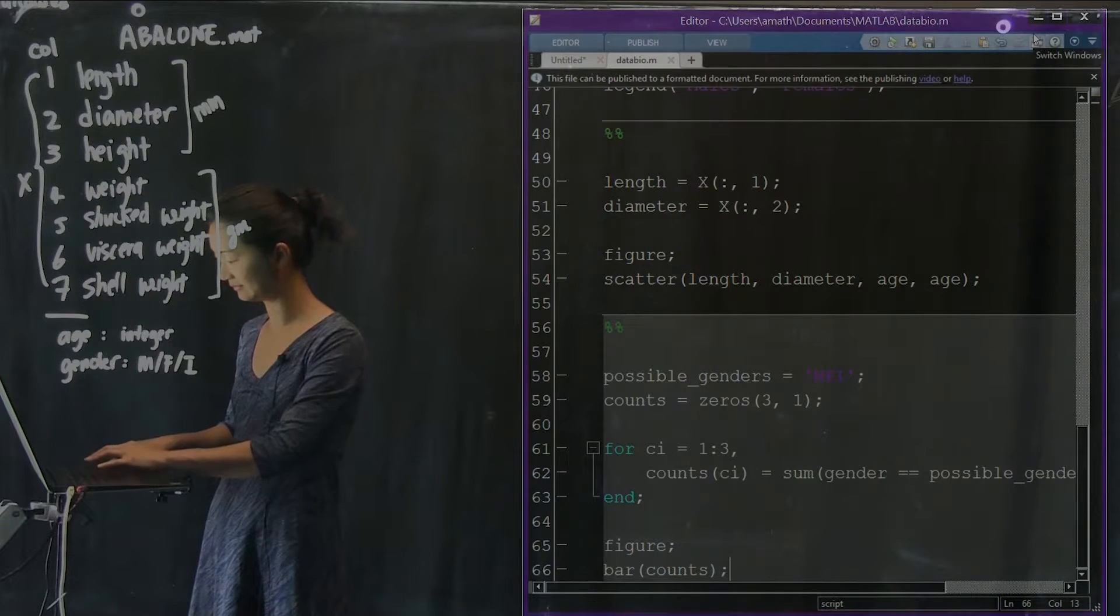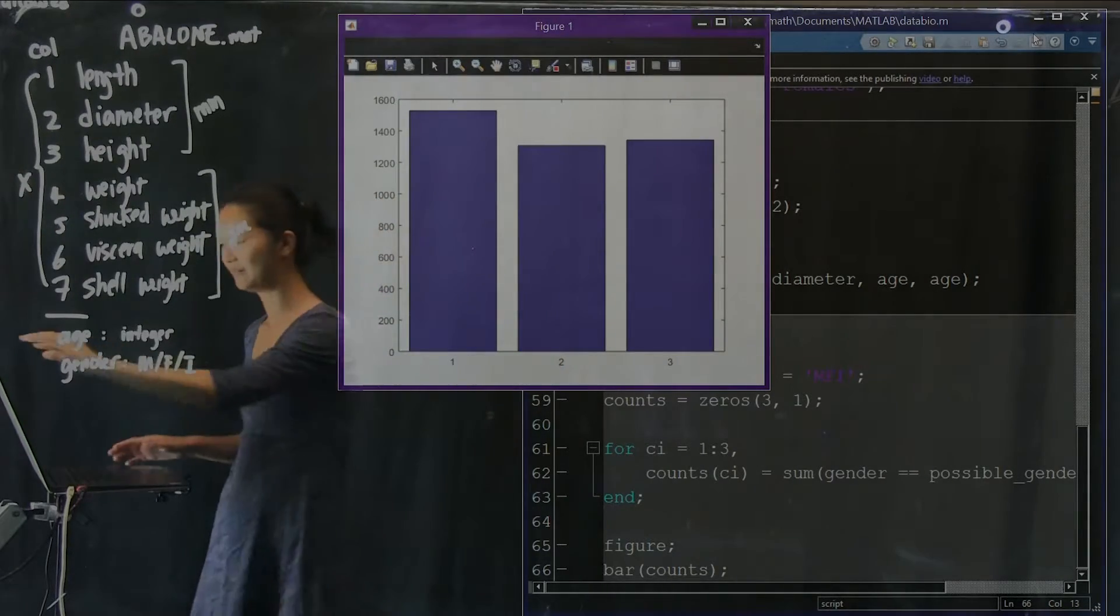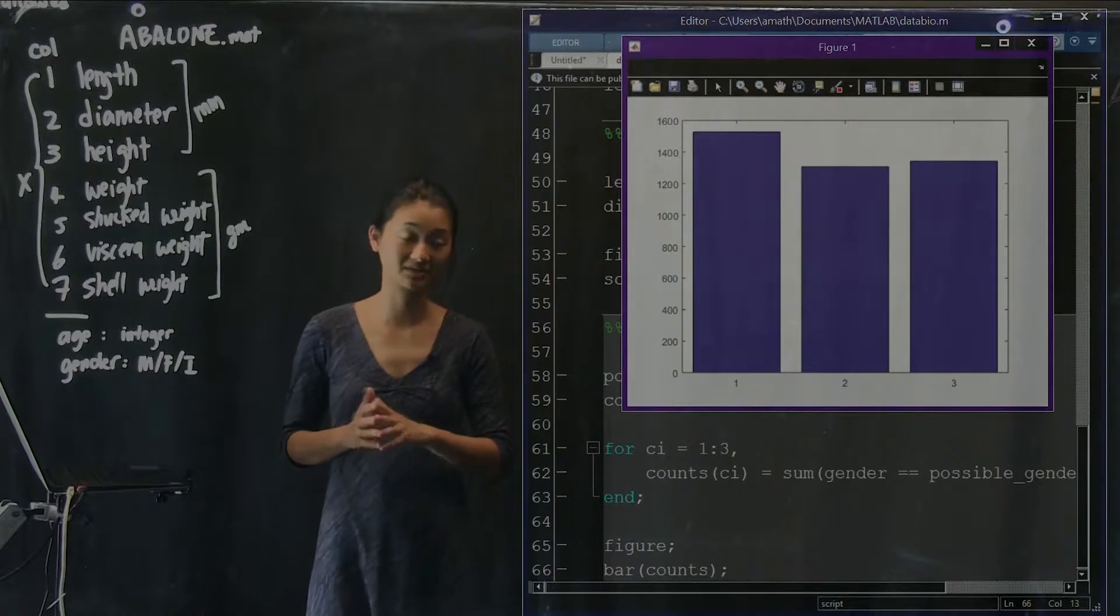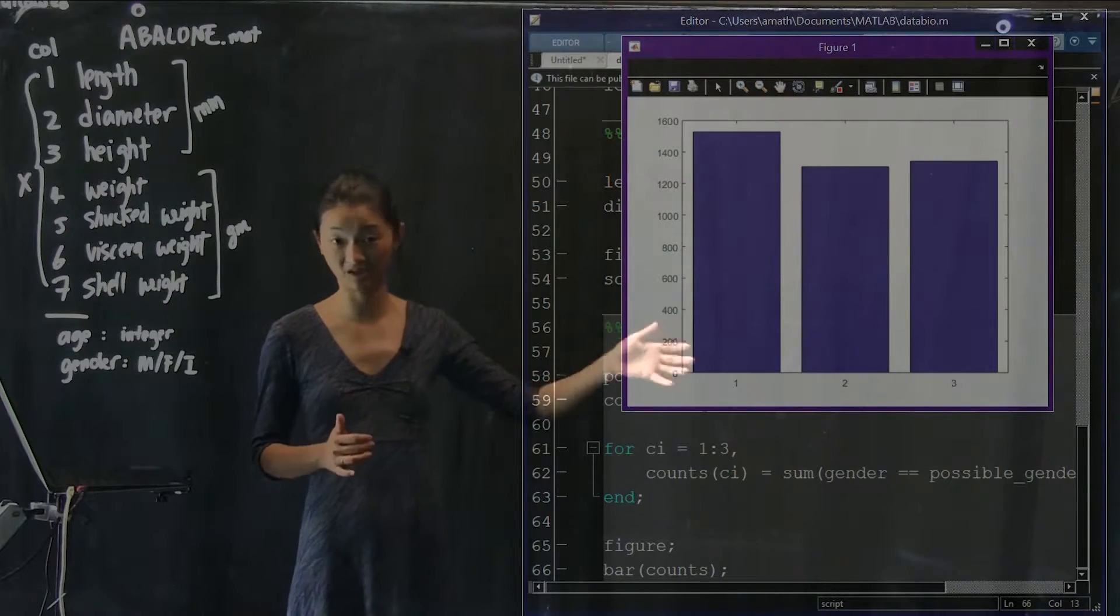We can do a bar of counts, which gives us this bar graph. Now, at this point, it is not a particularly fancy bar graph. It has all the default settings. It has all the default colors.